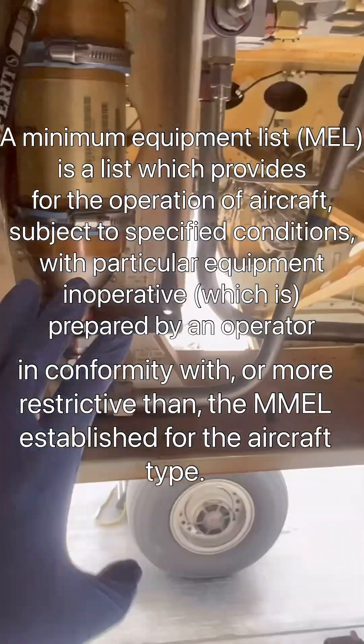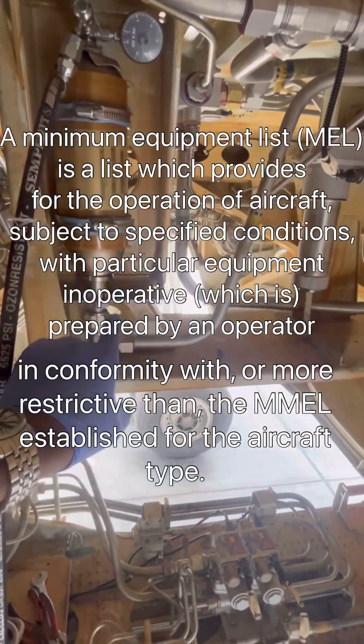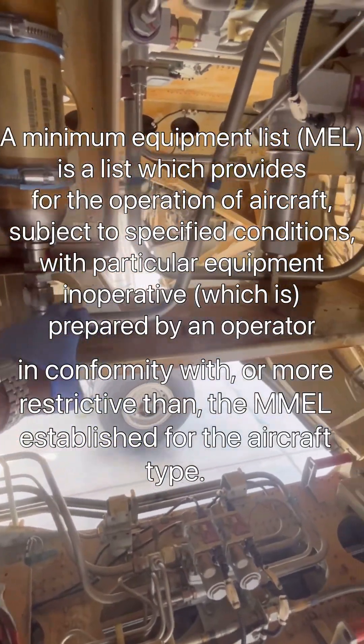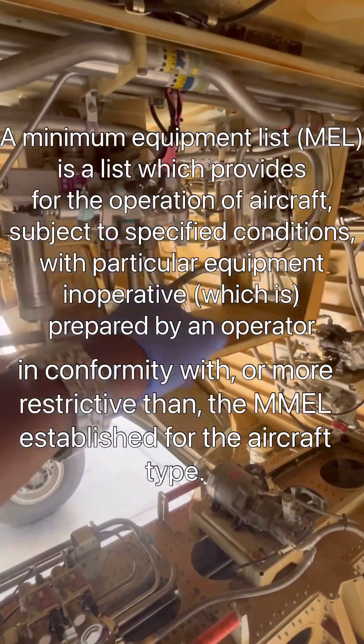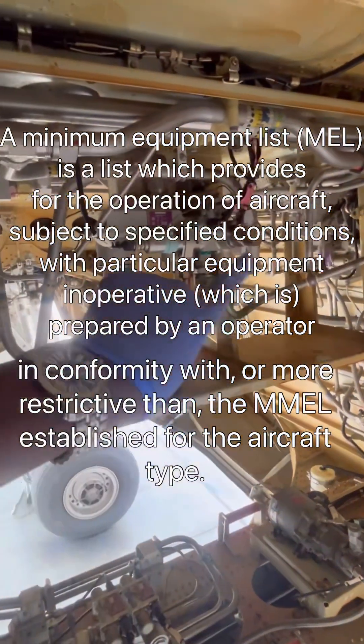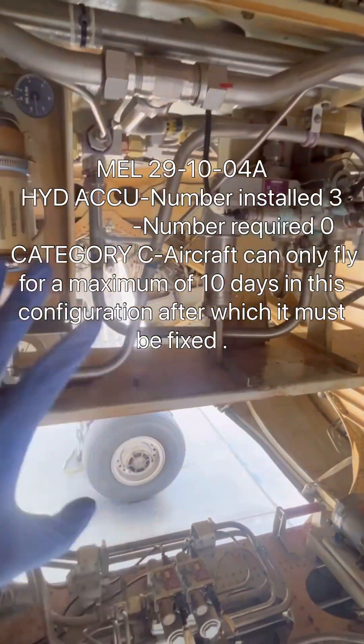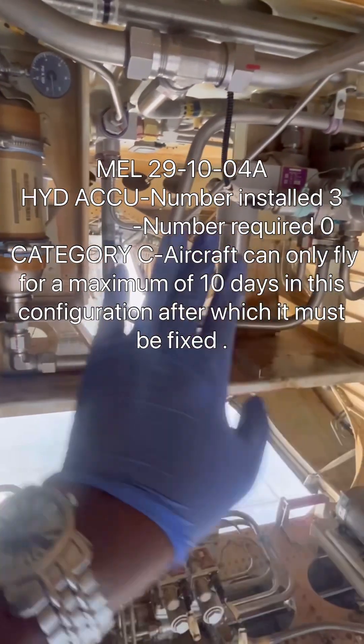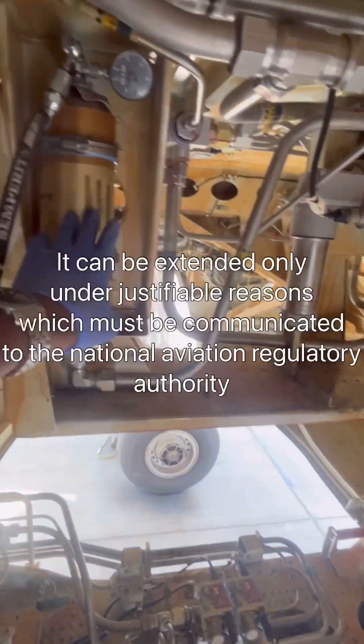On the Minimum Equipment List, we go to MEL 29-10-04 Alpha. As per that MEL, yes, the aircraft can be dispatched with an unserviceable green system power accumulator, but a maintenance procedure must be done.